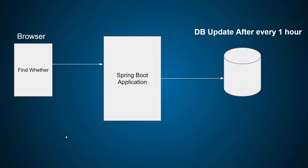Now, what is the problem here? Let's say there are one million requests coming for that weather application from the world — one million, ten million, or hundred million users trying to access this Spring Boot application. Once one million users call the Spring Boot application, it will call the database one million times, which is very costly and impacts performance. If you are hitting one million requests to the DB, it will definitely crash or at least the performance will get worst.